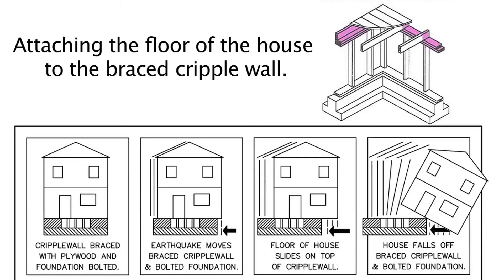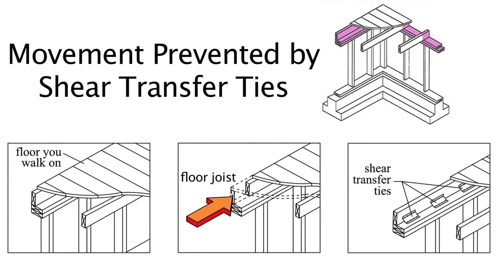Here you can see the kind of damage that can still occur when the house is bolted to the foundation and the cripple wall is braced with plywood. As you can see by this illustration, as the earthquake rocks the house back and forth, the cripple wall remains upright and remains on the foundation, but the house can still fall off the cripple wall. This movement is prevented by something called shear transfer ties. The floor you walk on is sitting on top of something called a floor joist. When the earthquake force pushes against the floor joist, the floor joist can move. This movement is prevented by attaching the floor joist to the top of the cripple wall with shear transfer ties.